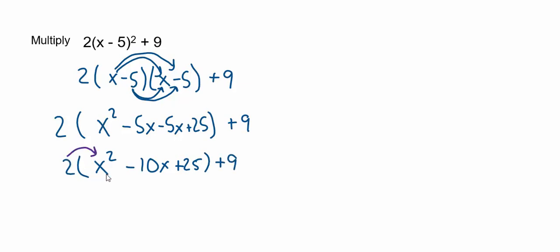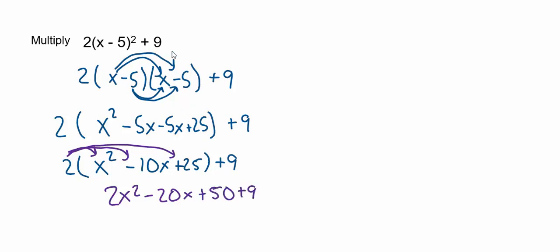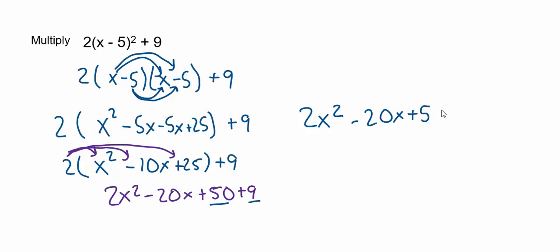Now it's time to distribute the two to the three terms inside the parentheses. 2 times x squared is 2x squared. 2 times negative 10x would be subtract 20x. 2 times 25 is 50. And then we still have that plus 9. Unlike the last problem, I have a little more simplification I can do, because 50 and 9 are both constants with no variable x. Since those are like terms, I can combine them. So my final answer would be 2x squared subtract 20x, and then 50 plus 9 is just 59. That would be my final answer because I cannot simplify further — we have an x squared term, an x to the first term, and a constant term.